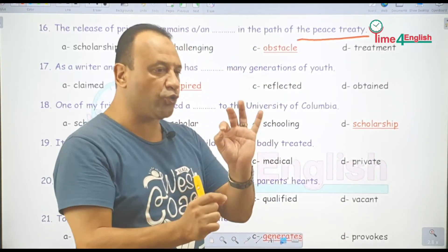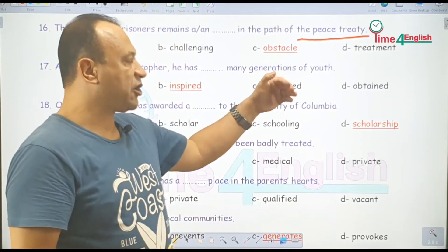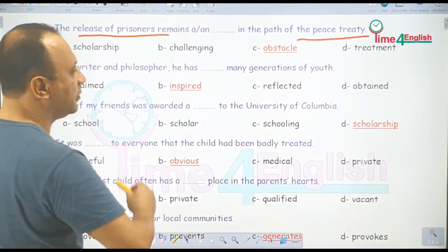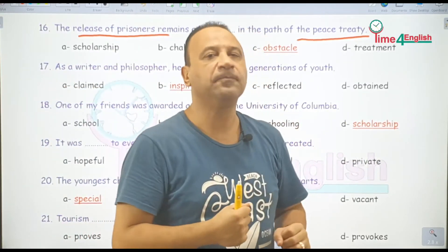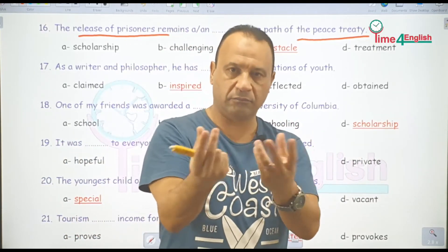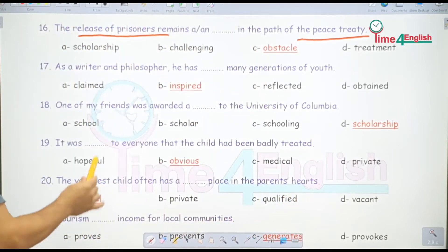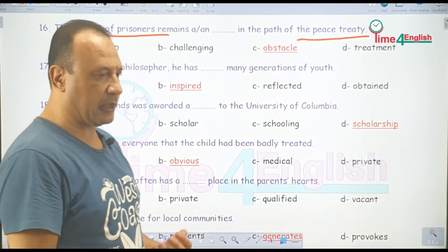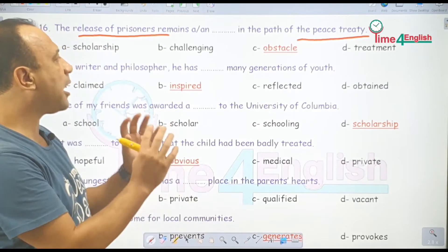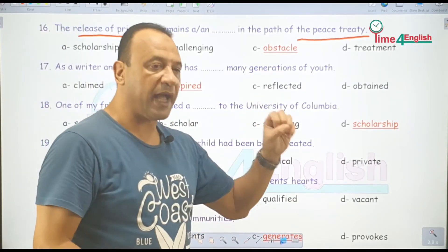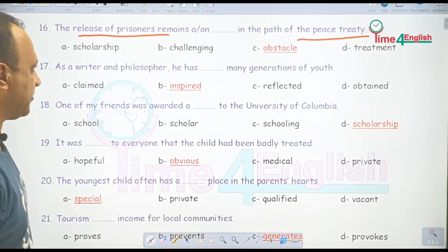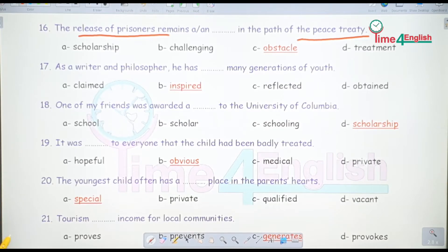في دولتين عايزين يعملوا معاهدة السلام، يبقى فيه أسرى ما بين الدولتين. الإفراج عن الأسرى هل ده سهل؟ ربما دولة منهم مش عايزة، علشان كده ده يظل عقبة في طريق تحقيق الـ peace treaty — معاهدة السلام. As a writer and a philosopher — ككاتب وفيلسوف مشهور.